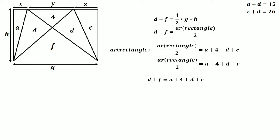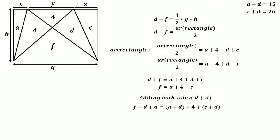Subtracting d from both sides, and then adding d plus d to both sides, we get f plus 2d equals a plus d plus 4 plus c plus d. Using the values we found — a plus d equals 15 and c plus d equals 26 — so f plus 2d equals 15 plus 4 plus 26, which gives d equals (45 minus f) divided by 2. Write this result in the corner.